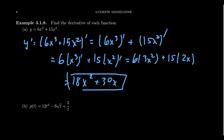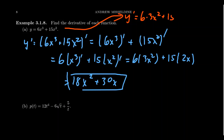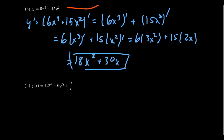Much of this process can be simplified dramatically. Eventually we reach a point where we say y prime equals 18x squared plus 30x in one line: 6 times 3 is 18, lower the power to x squared; 15 times 2 is 30, lower the power to x. Many of us will quickly reach the point where the derivative of a polynomial is a one-liner — much simpler than computing it from the definition.